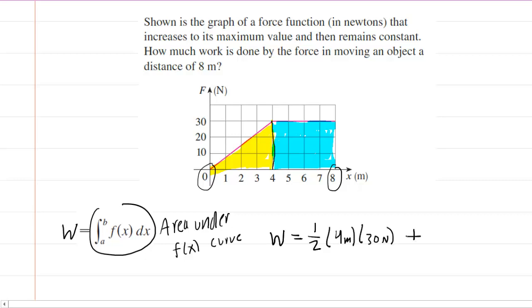And then to that, we're going to add the area of the blue rectangle. That would just be base times height. We can see that the base from 4 to 8 would have a length of 4 meters. And then the height of the rectangle is the same as the height of the triangle. It was 30 newtons.